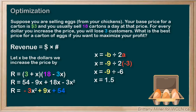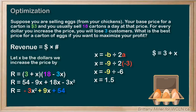Now, what does this number mean? Remember, X was the amount of dollars we would increase the price from the base price of $3, so the optimal price of a carton of eggs in this scenario is $3 plus $1.50, which is $4.50.